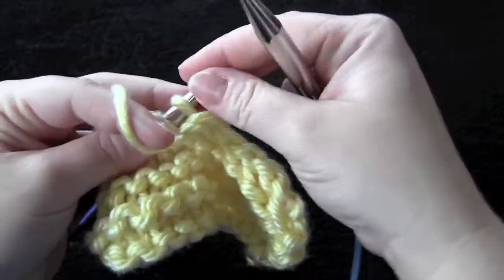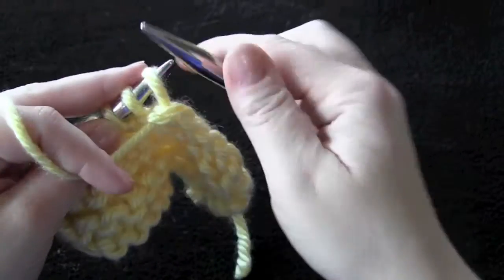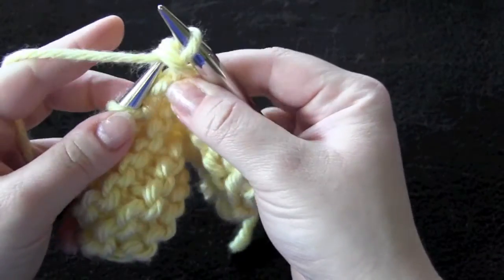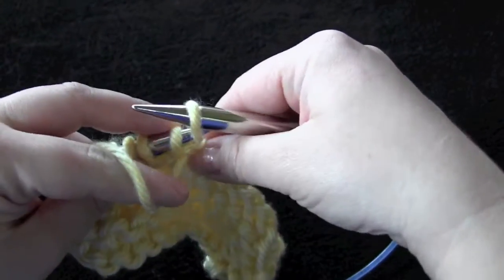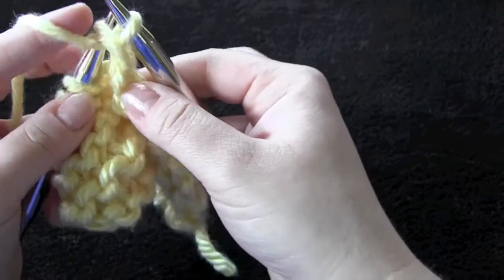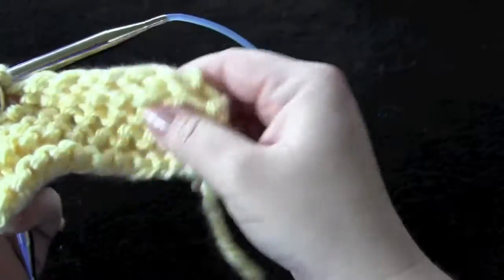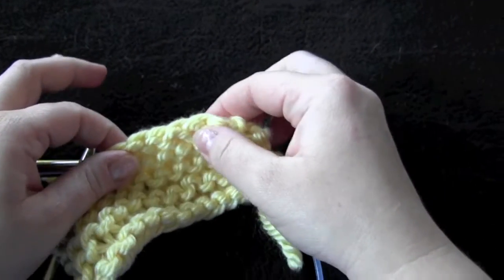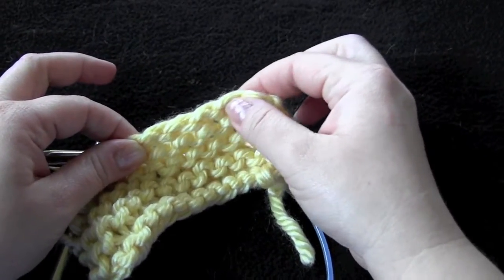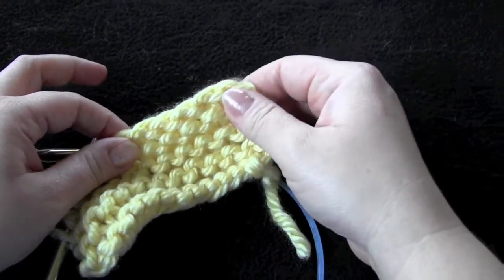And of course, with the purl method, you would just purl your last two stitches together, cut your tail, and weave in your end. Another nice flexible edge here. And that's the decrease bind off three ways.